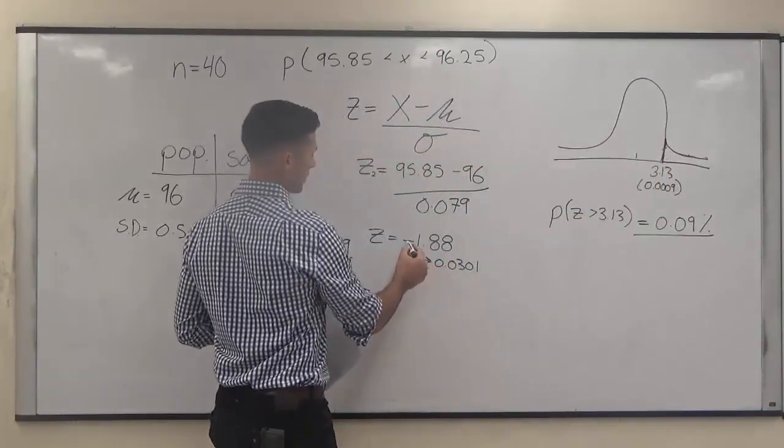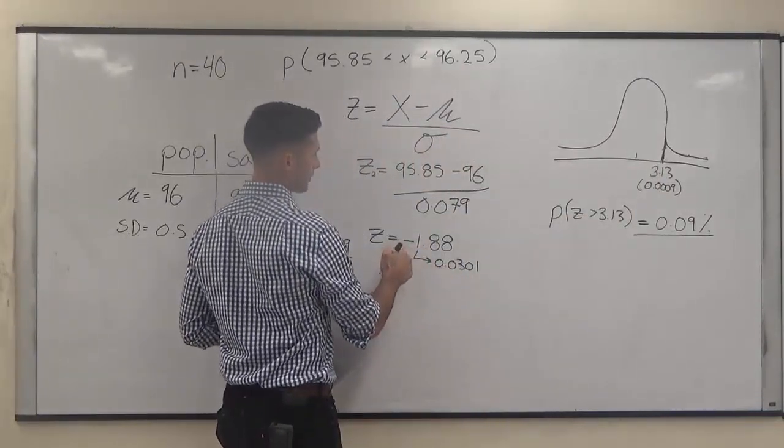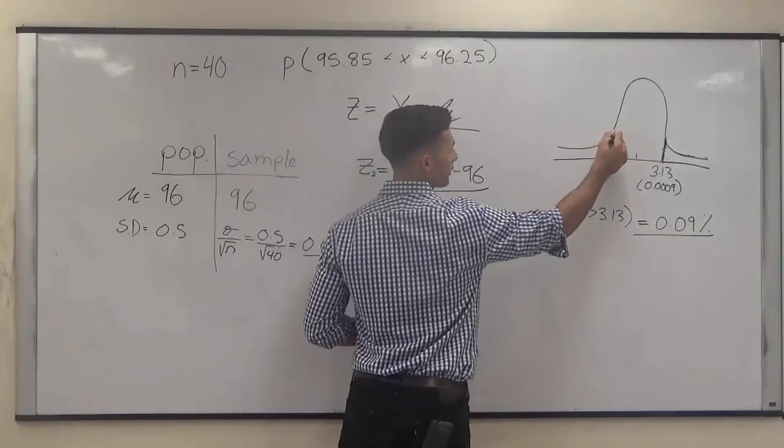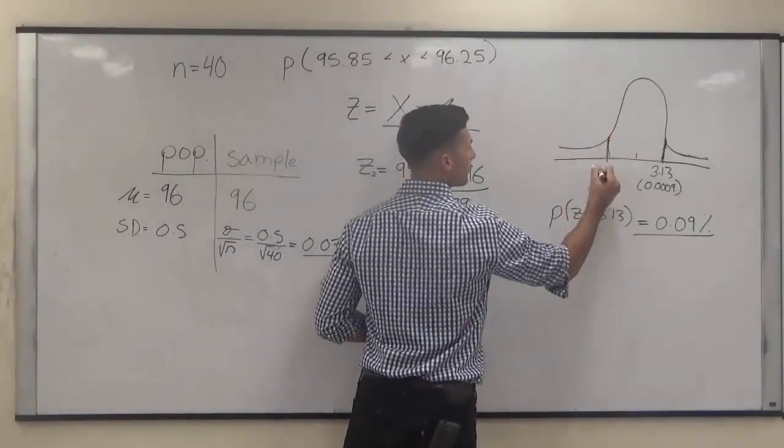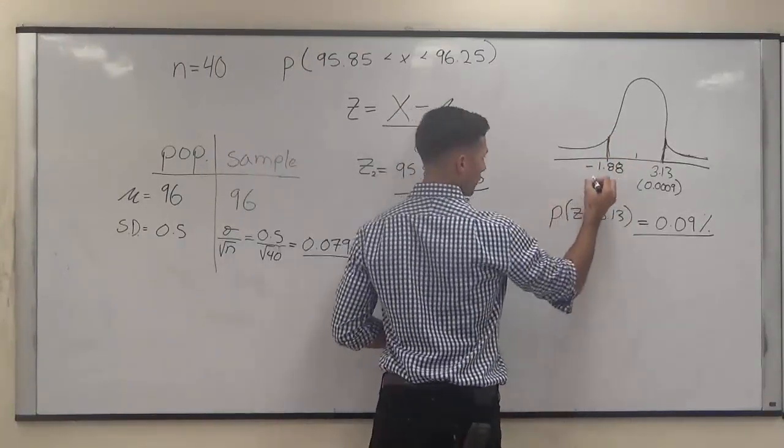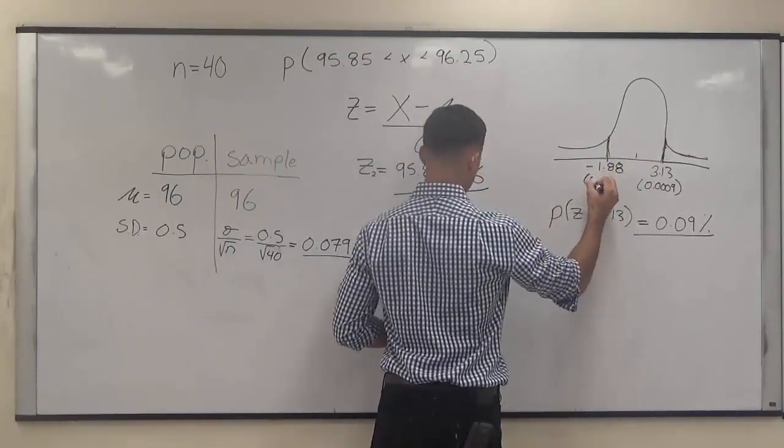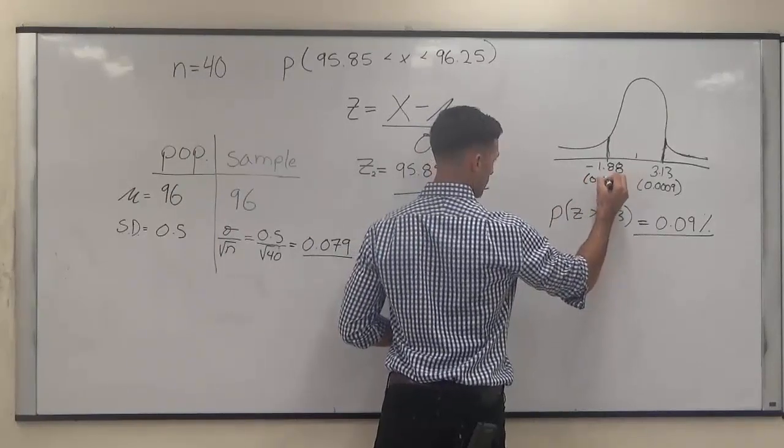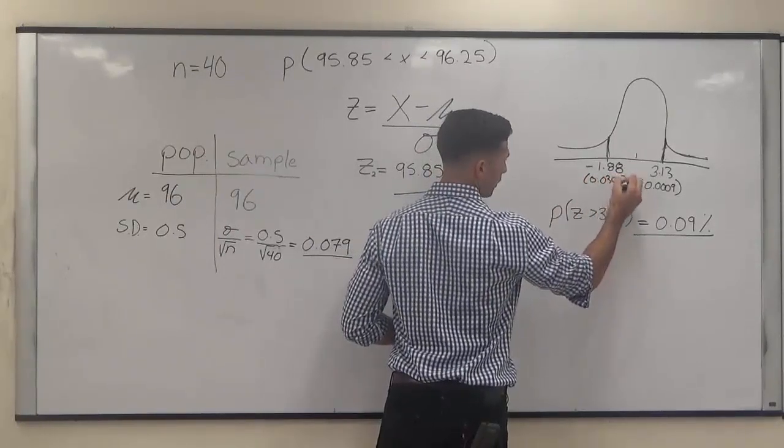However, this negative number right here, our z-score negative 1.88, is going to go on this side. Our z-score based on that, 0.0301.